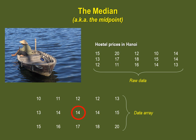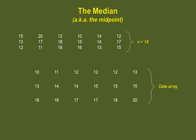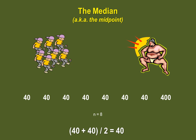Note that the original unsorted data is called raw data, while data rearranged in order is a data array. When you have an even number of values, the median falls between two values. You add the two middle values together and divide by two. With that data set, the median is 14.5. Contrarily to the mean, the median is not really affected by extreme values. Even with the sumo wrestler example, the median remained 40 — extreme values did not influence it.